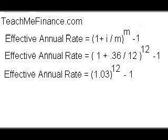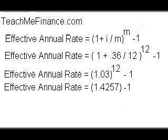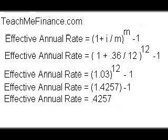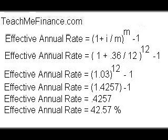0.36 divided by 12 equals 0.03. So 1 plus 0.03 equals 1.03. 1.03 to the power of 12 is 1.4257. Take 1.4257 and subtract 1 and you get 0.4257. Shown as a percentage, it's 42.57%. So the effective annual rate is 42.57%.